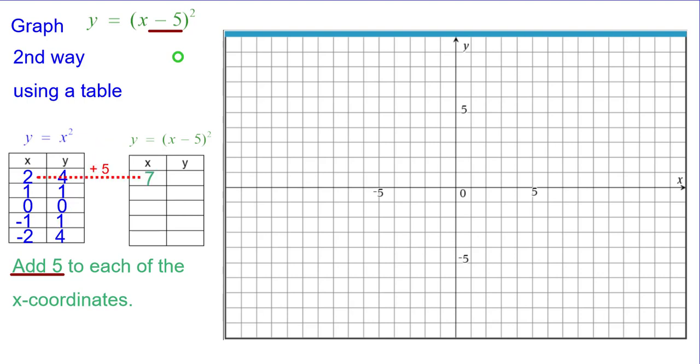So the 2 will become 7, but the y stays the same as 4. So 7 comma 4. 1 plus 5 is 6. The 1 stays the same. 6 comma 1.